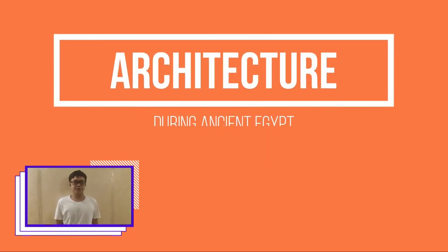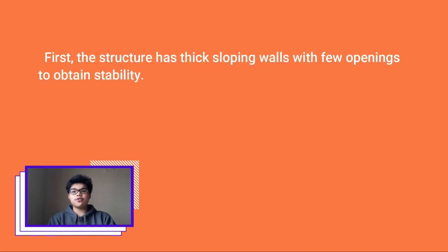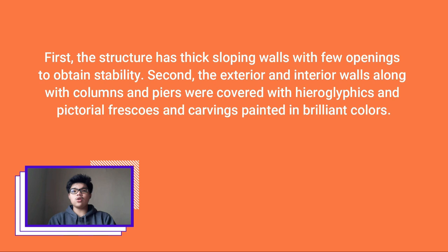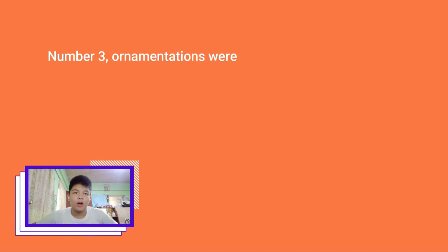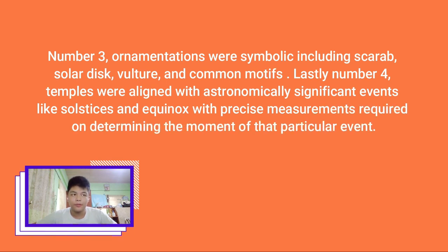Let us move on to Egyptian architecture, known to have developed during the pre-dynastic period, around 4000 BC. First, structures have thick sloping walls with few openings to obtain stability. Second, the exterior and interior walls, along with columns and piers, were covered with hieroglyphics and pictorial frescos and carvings painted with brilliant colors. Third, ornamentations were symbolic, including the scarab, solar disk, vulture, and other common motifs. Fourth, temples were aligned with astronomically significant events like solstices and equinoxes, with precise measurements to determine the moment of those particular events.